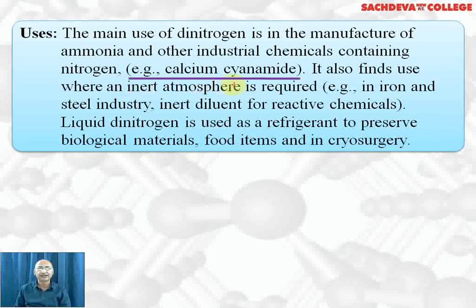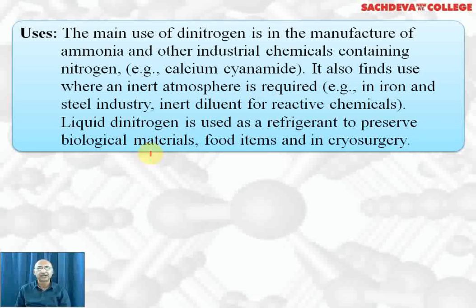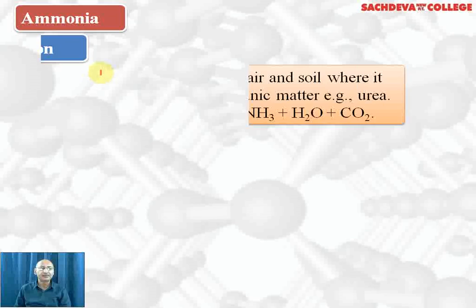The main use of dinitrogen is in the manufacture of ammonia and other industrial chemicals containing nitrogen, like calcium cyanamide, which is used as a fertilizer. It also finds use as an inert atmosphere — for example, in the iron and steel industry and as an inert diluent for reactive chemicals so that iron will not get oxidized. Liquid nitrogen is used as a refrigerant to preserve biological materials and food items, and also in cryosurgery — surgery at low temperature.